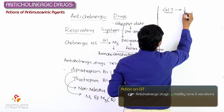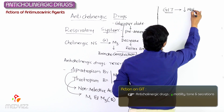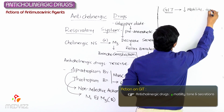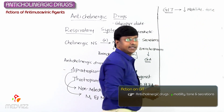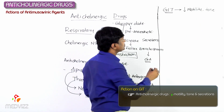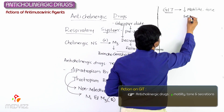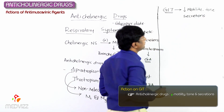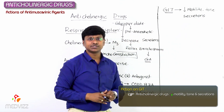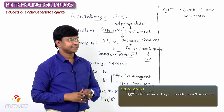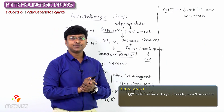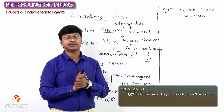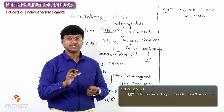So anticholinergic drugs will decrease the motility, decrease the tone, and also decrease the secretions in the gastrointestinal tract. Now let me tell you what are those anticholinergic drugs which are used in the treatment of various GI disorders.